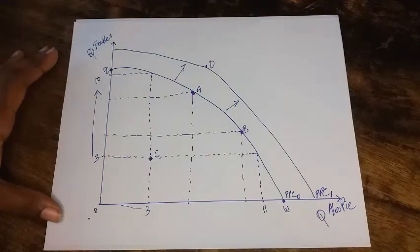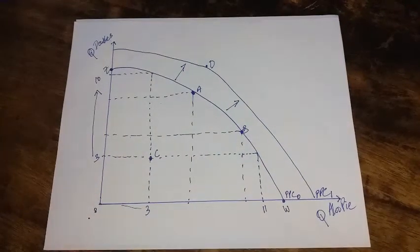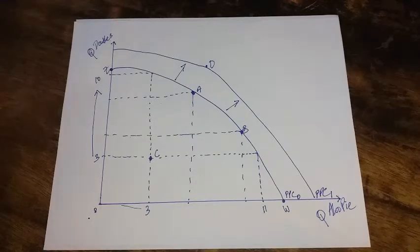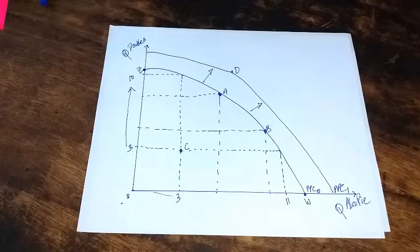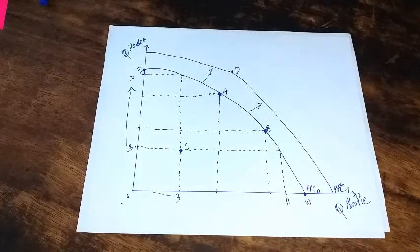The reverse is also true where the PPC curve can shift inwards, which is a reduction in the amount of goods and services a country can produce. And usually these things would happen when you have crime, you have war. Think about it. If you have crime, it means people are less likely to invest, so the economy shrinks. You have war. People would not be producing as much goods and services. So there are many factors which can cause your production possibility curve to shift to the right or to the left.